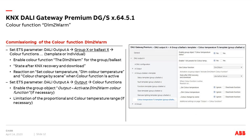Now let's look at the ETS parameters. First, we set parameters in DALI output A or B, in the group or in the ballast — using a template or individual settings. We must enable the color function DIMM-TO-WARM for the group or ballast, set the state parameter for KNX voltage recovery or after download, and configure the reaction when the DALI gateway receives a color temperature command, a dim command, or a scene call.